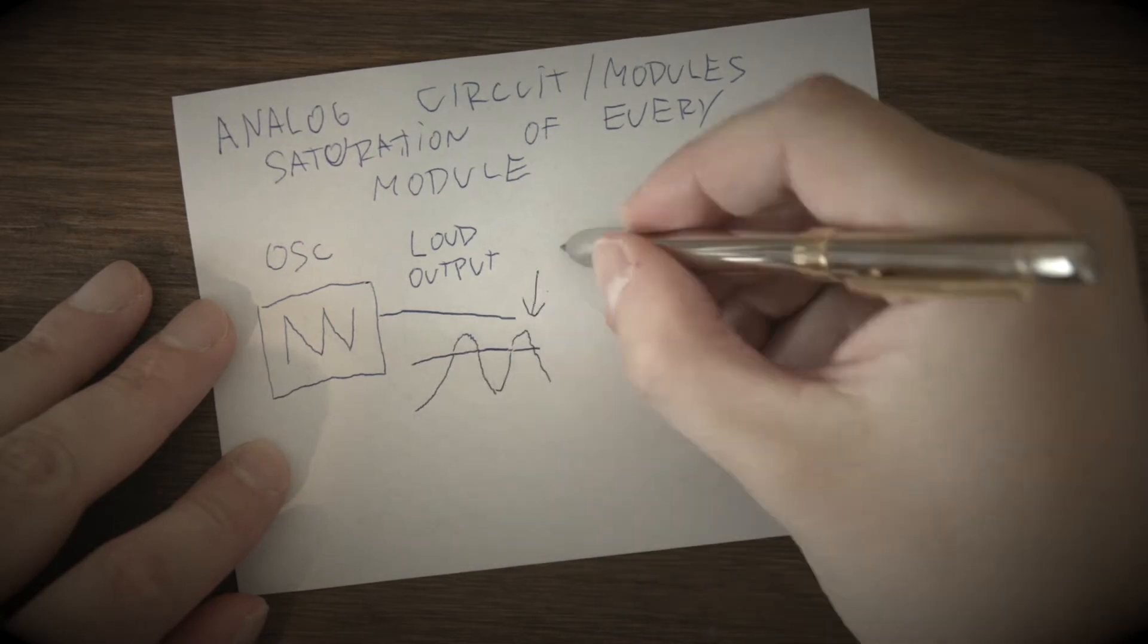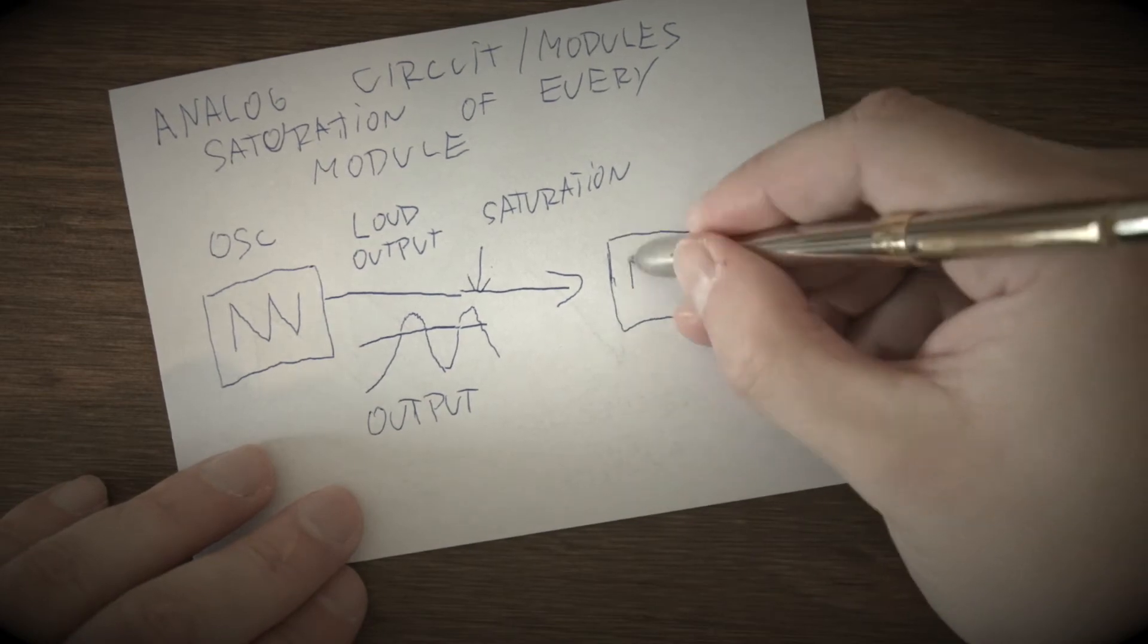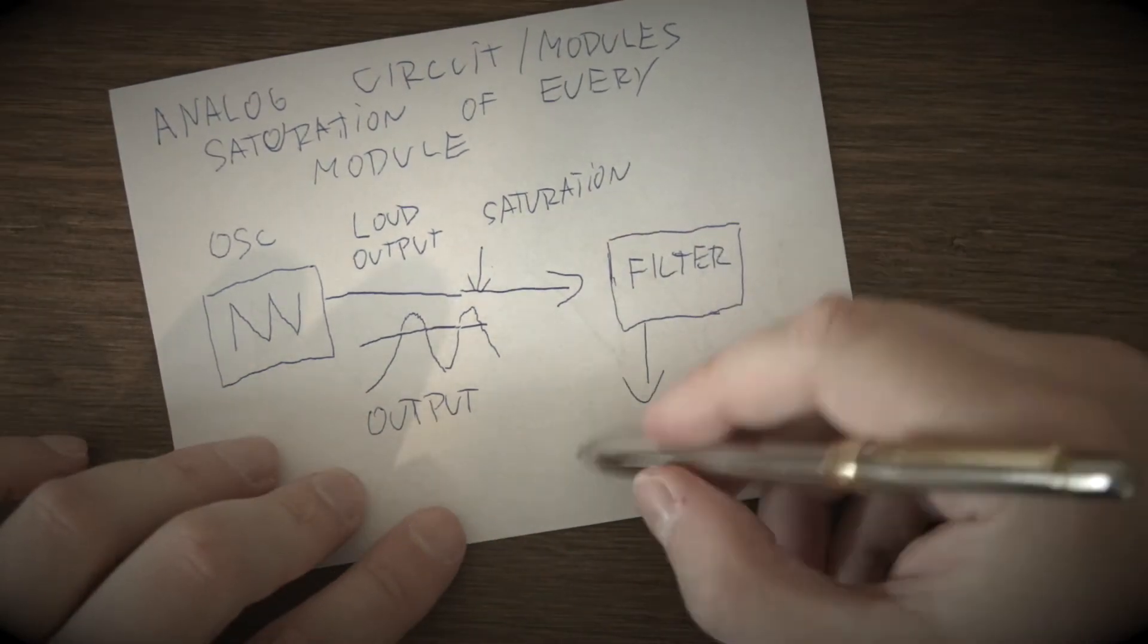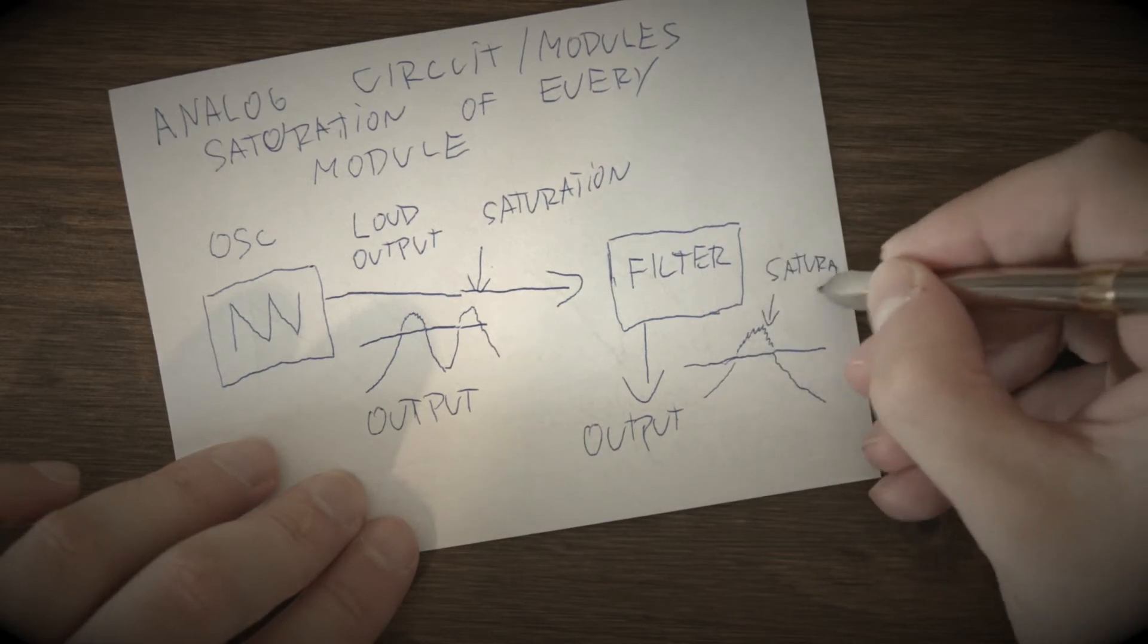Oscillator module, filter module circuit are saturated separately. Also in equalizers, input and output coil transformers, individual frequency boost circuits are saturated separately.